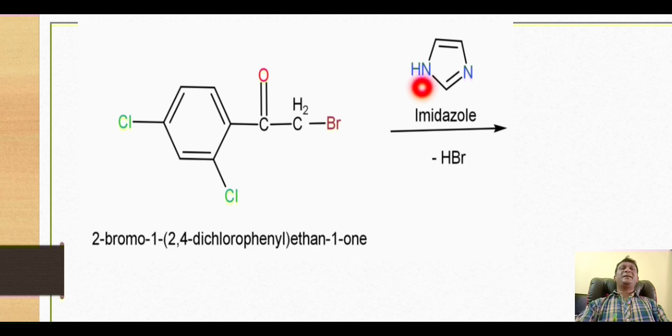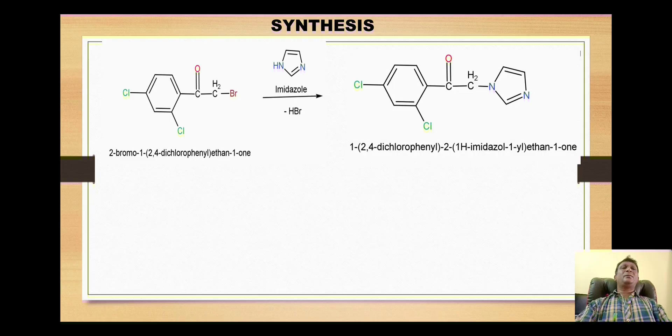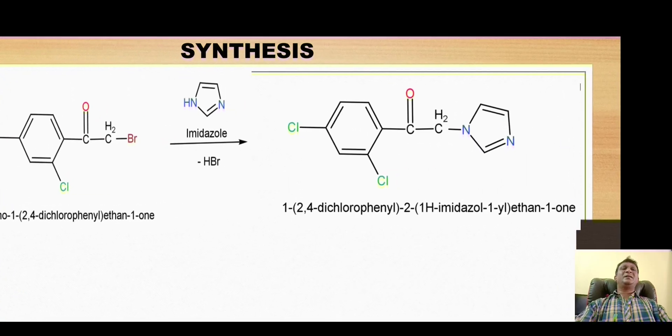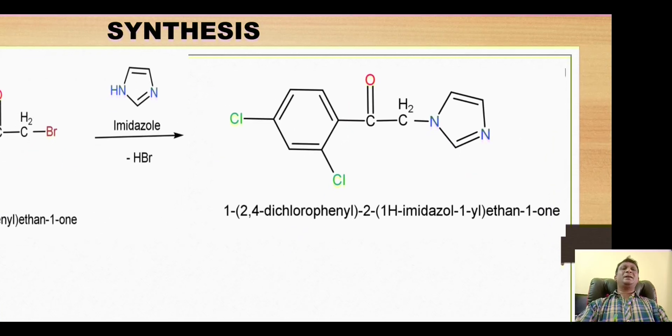This nitrogen is quite basic in nature and behaves as a nucleophile. This nucleophile attacks on this carbon to bring about the nucleophilic alkyl substitution reaction, thus releasing one HBr molecule. Thus, this imidazole ring gets attached on this carbon, which is carbon number two. This gives us the formation of this derivative where the imidazole ring is attached on carbon number two to give this ethanone derivative.